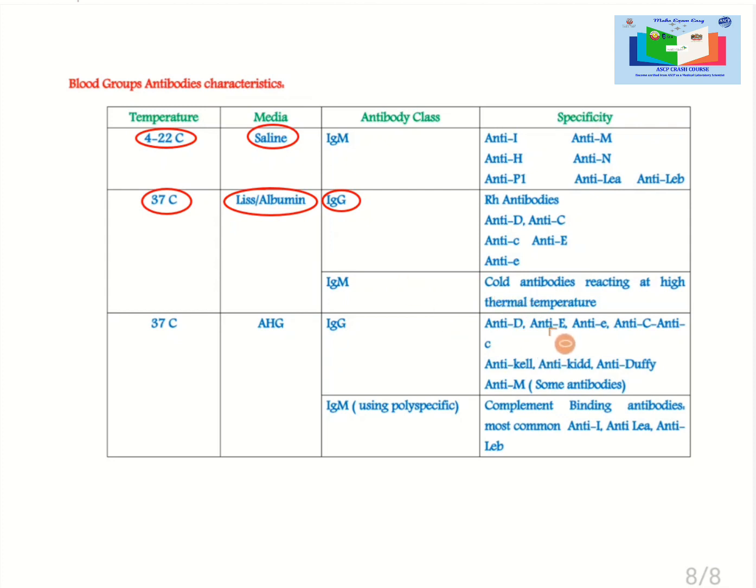Anti-D, Anti-E, Anti-e, Anti-C, Anti-c, Anti-K, Anti-Kidd, Anti-Fy and some Anti-M are IgG in nature and these antibodies are best detected when they are pre-bound to corresponding antigens on red blood cells. For this purpose, anti-human globulin is used as a media. As they are IgG in nature and are warm antibodies, they best react at 37 Celsius.